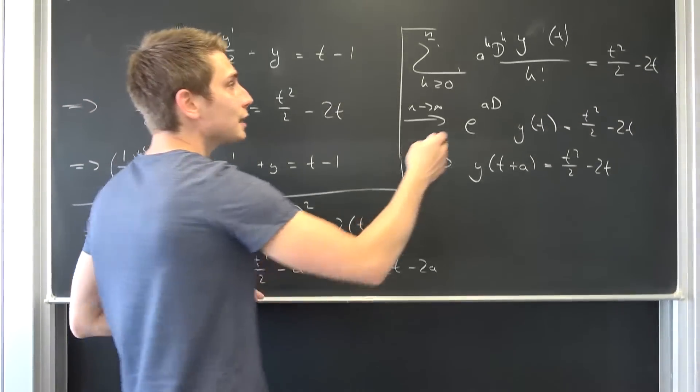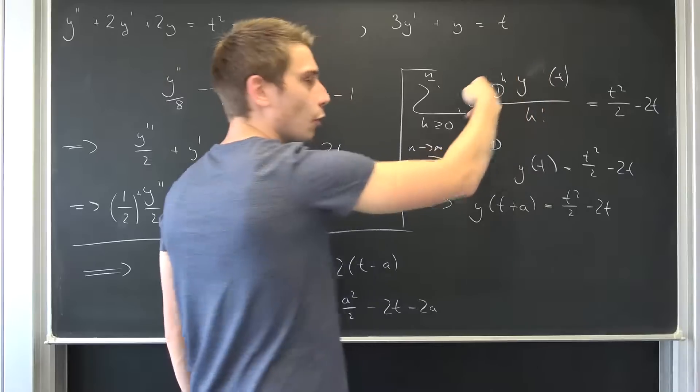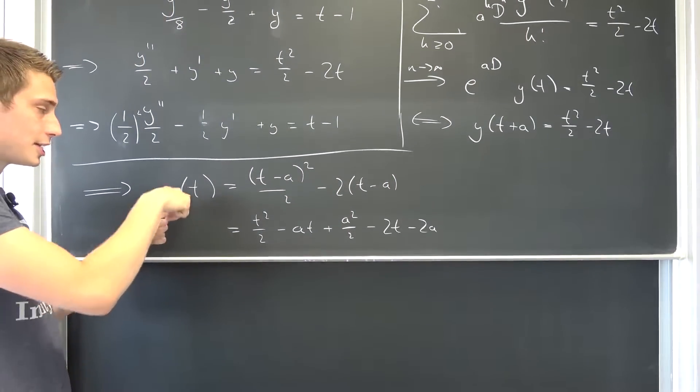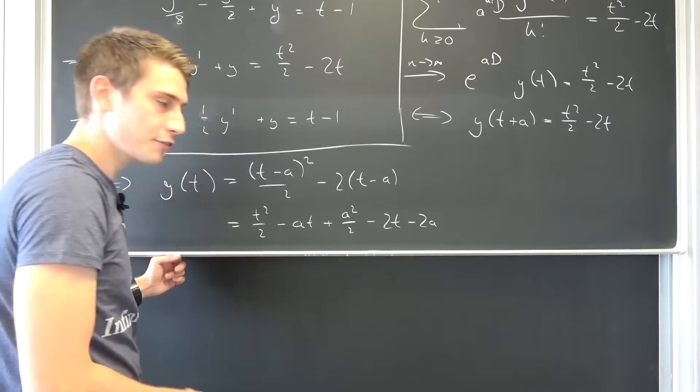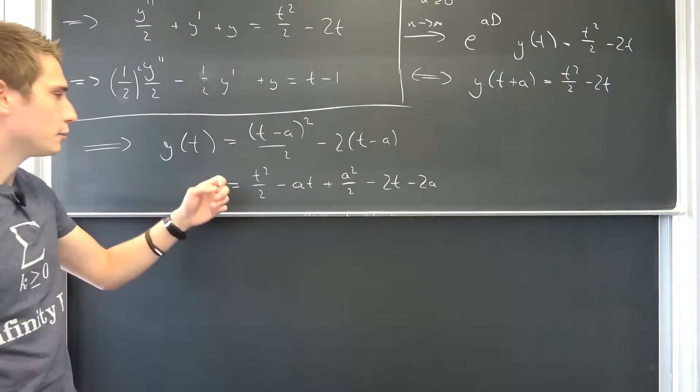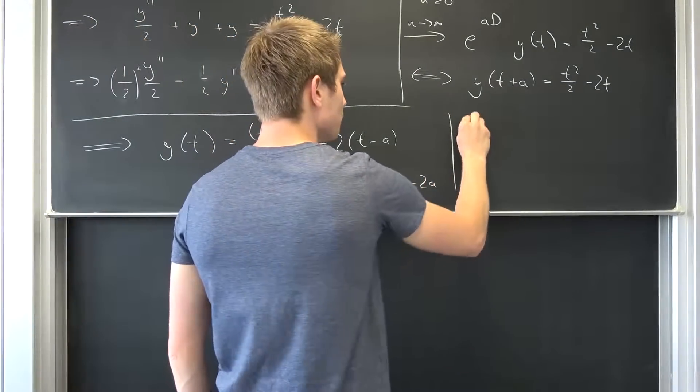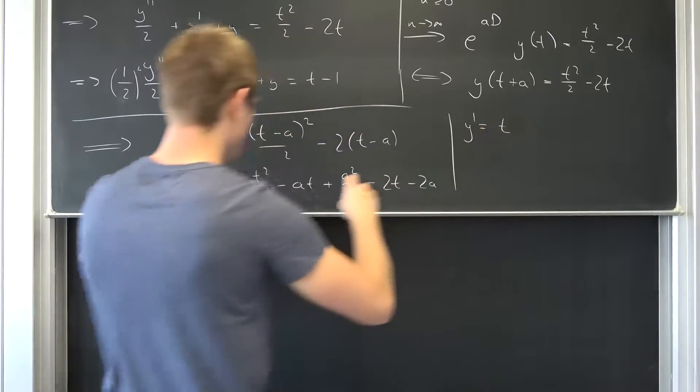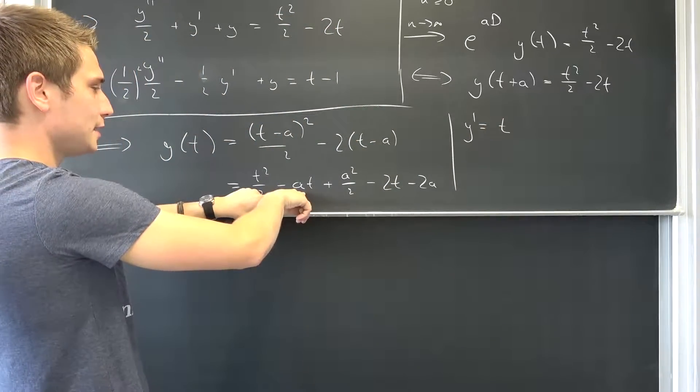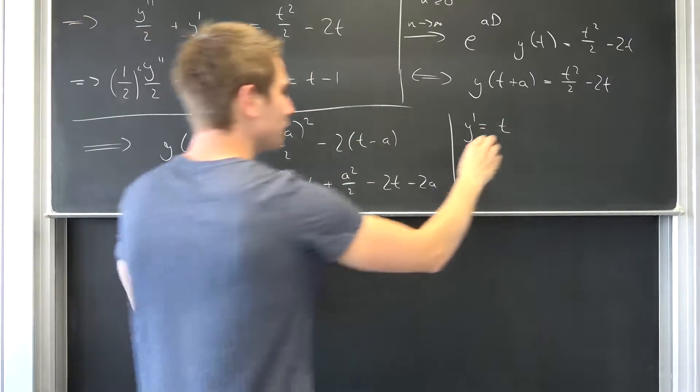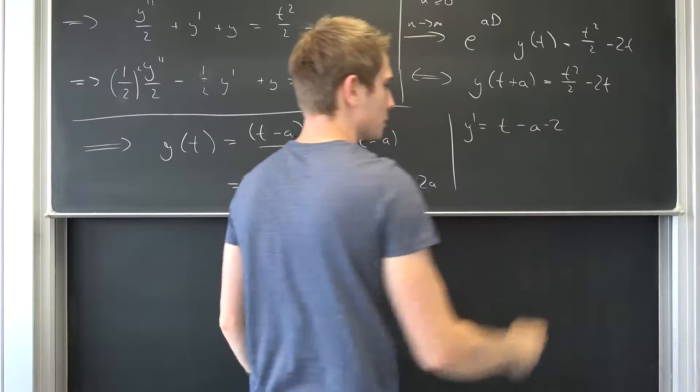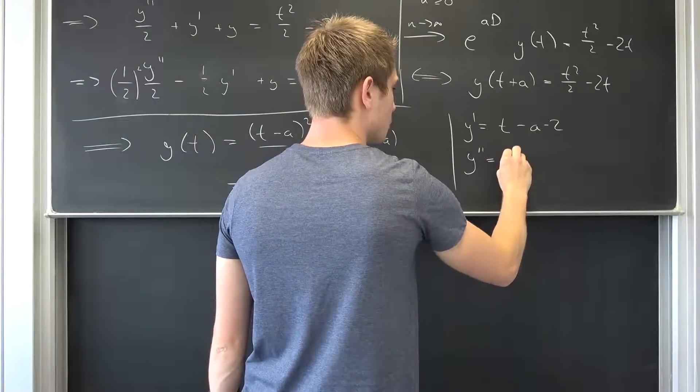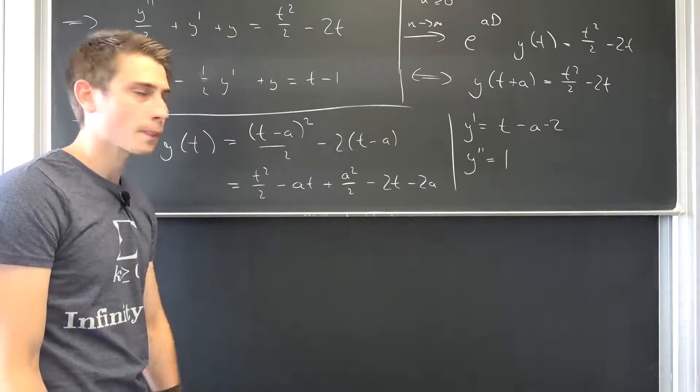Now we are dealing with an nth order differential equation right here. How often can we differentiate this function y after it becomes zero? Well, if we differentiate it one time, y prime, we are just going to get, this is going to give us t minus a minus two, right. T minus a minus two. This is what we are going to get. If we differentiate it even further, y double prime, it's going to result in simply one.